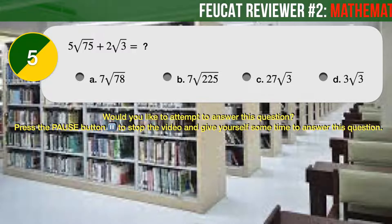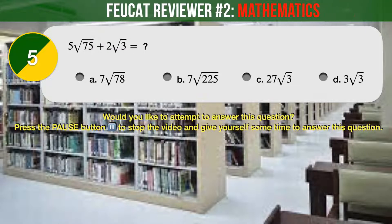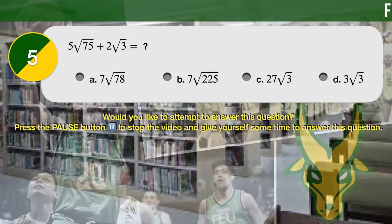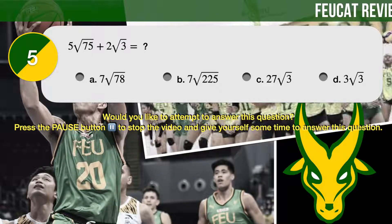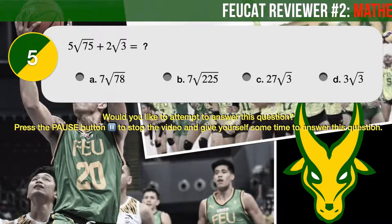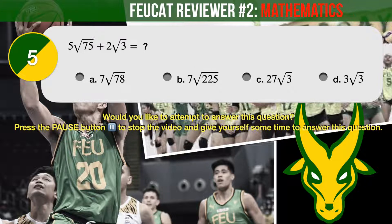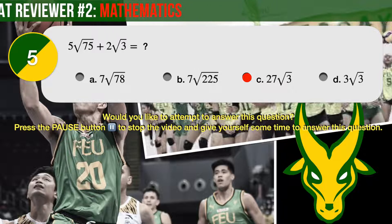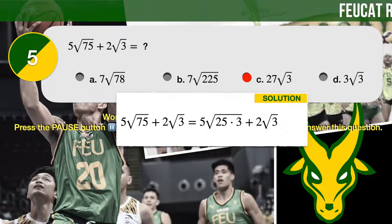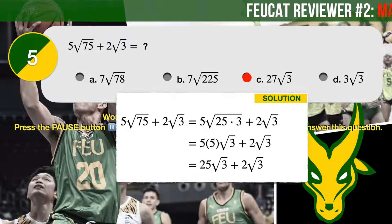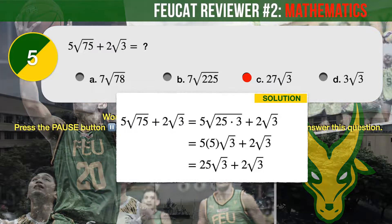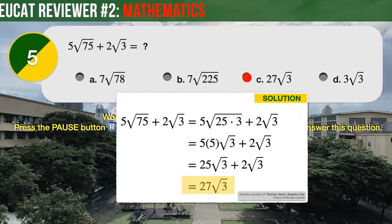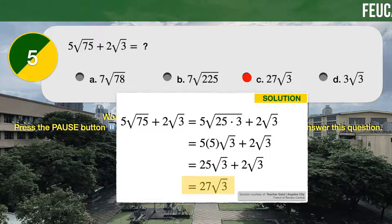Question Number 5. 5 times the square root of 75, plus 2 times the square root of 3, is equal to: A: 7 times the square root of 78. B: 7 times the square root of 225. C: 27 times the square root of 3. D: 3 times the square root of 3. The correct answer is C, 27 times the square root of 3. First, expand square root of 75 to square root of 3 times 25. Since 25 is a perfect square, its square root is 5. We now have two terms with the common factor square root of 3, and adding the coefficients gives 27 times the square root of 3.